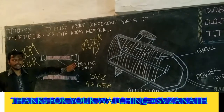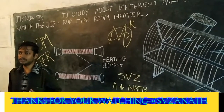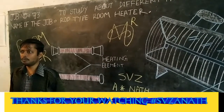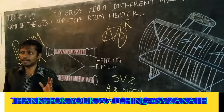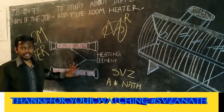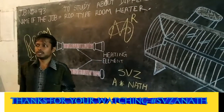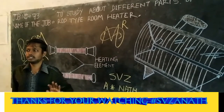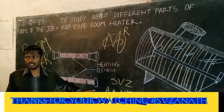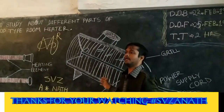Now we discuss about the heating element. A spiral shape heating element is provided at the center of the room heater. It is made up of Nichrome wire and mounted on the base of the heating element, which is made of china clay. The heating element is wound over the china clay of this rod, and both the ends of the element are brought out to the terminal of the rod.